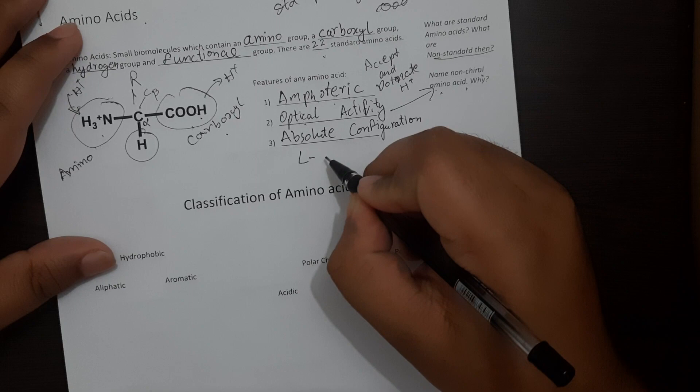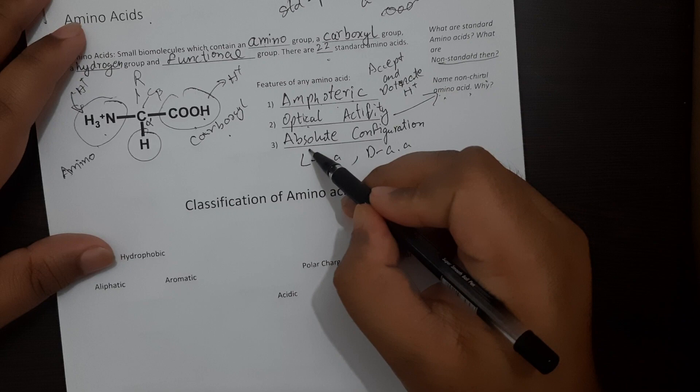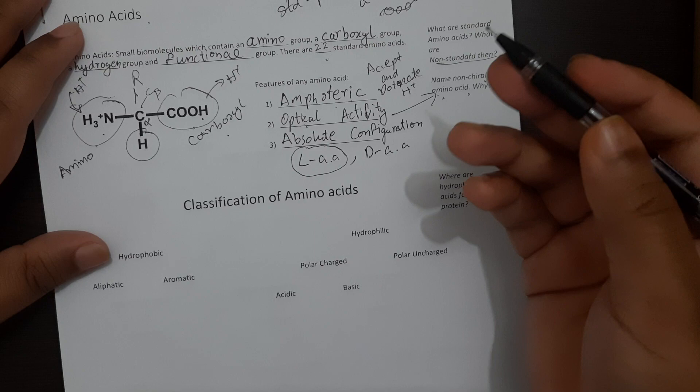So every amino acid can either be found in the L-form or in the D-form. In our human body we always find the amino acid to be in the L-form. So we'll only have L-alanine, L-glycine and so on in our whole body.